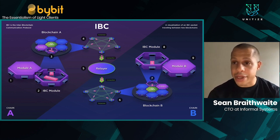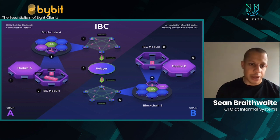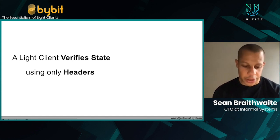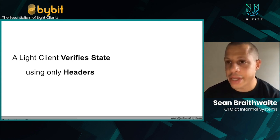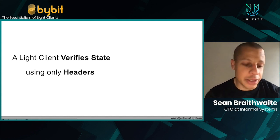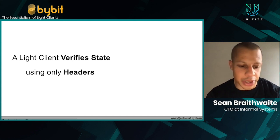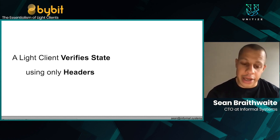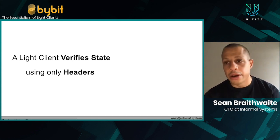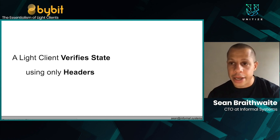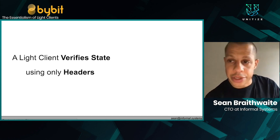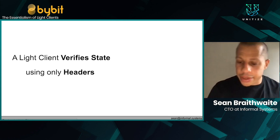The light client verification protocol allows us to essentially verify state without accumulating it, so without having the entire blockchain history. In short, the light client verifies state using only headers — the metadata that describes particular parts of the chain state without the transactions themselves. This is somewhat essential to a number of applications, the relayer only being one of them. Another application would be running on low-power devices — if you ever wanted to verify state as an embedded component on a mobile device, you would need to embed a light client.